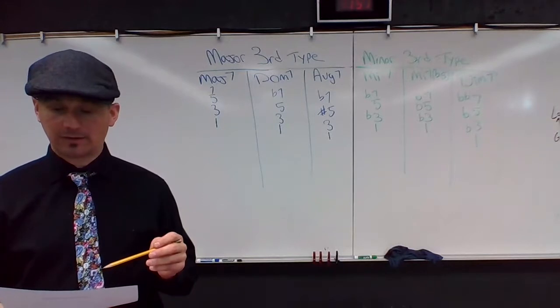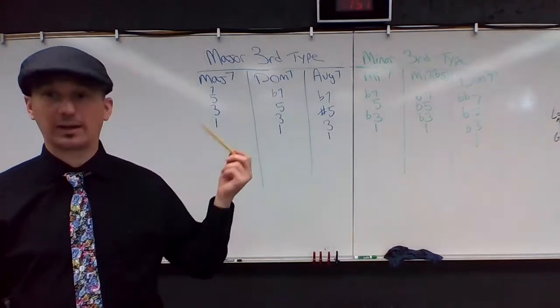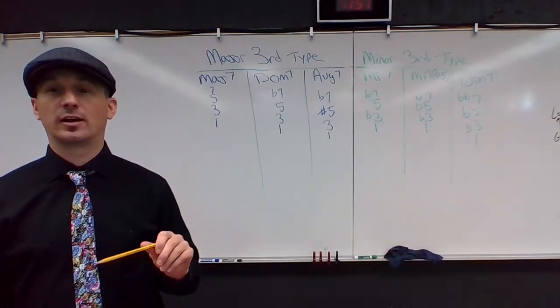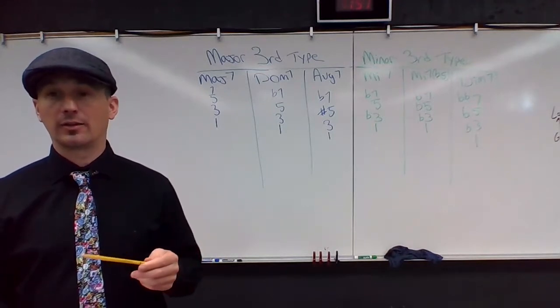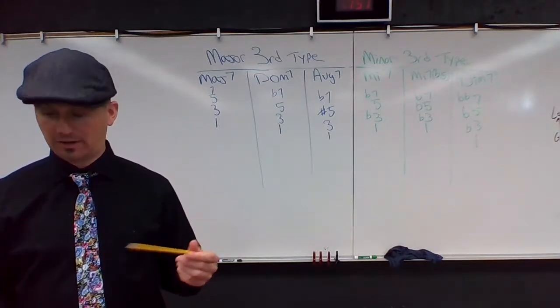You've got to know your triad spellings from a chord symbol. So if I were to write an F minor up there, you would need to tell me that F, A flat, and C are the notes that make up that particular triad.